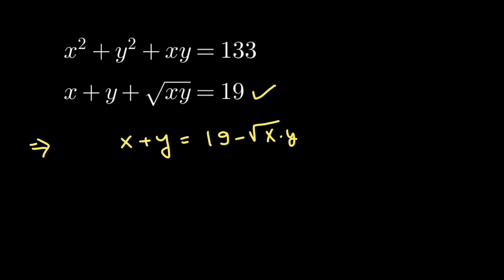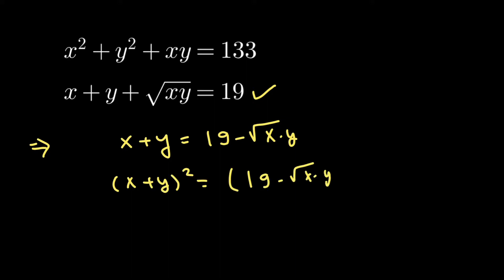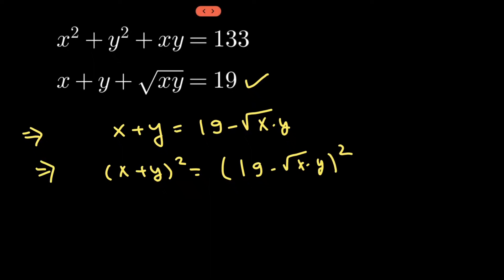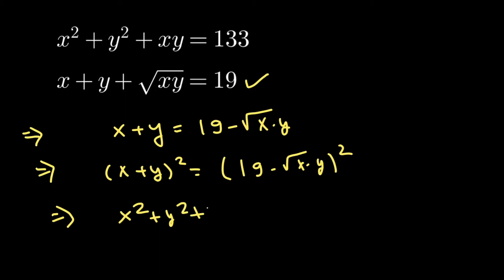In the second step, I will square both sides of this equation. So I get (x + y)² = (19 − √(xy))². Opening the bracket on the left-hand side gives x² + y² + 2xy.